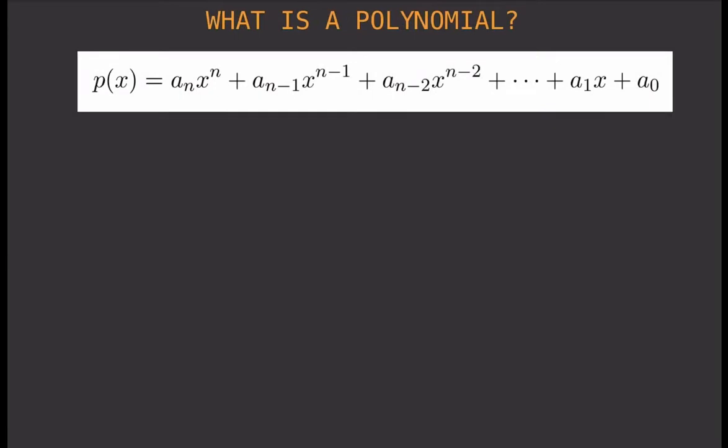What is a polynomial? Instead of defining what a polynomial is, I'm just going to show you what a polynomial looks like and then we'll explain the details from there. So you have a bunch of terms, coefficients, exponents, and stuff. Any expression that can be written in this form is a polynomial, and those that cannot be written in this form are not polynomials.